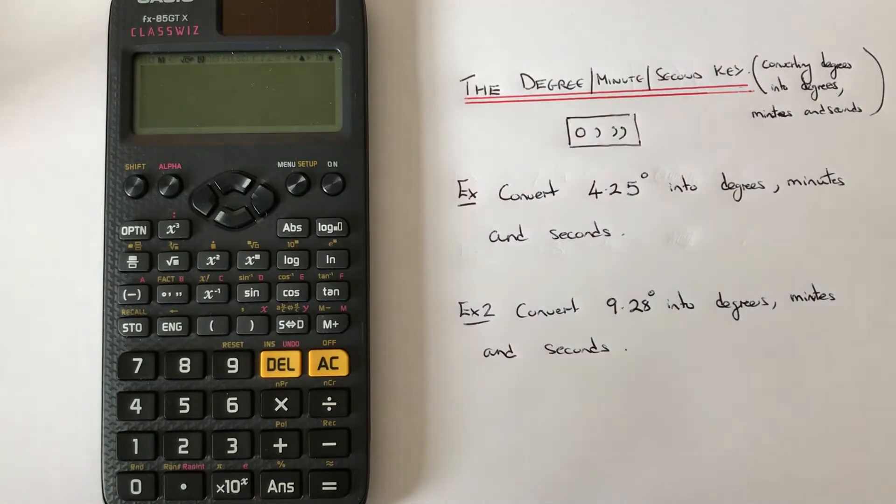So let's have a look at the two examples that we have. So we've got to convert 4.25 degrees into degrees, minutes and seconds.